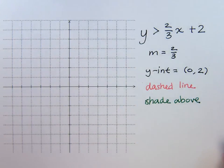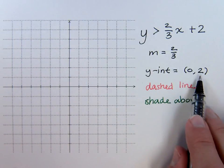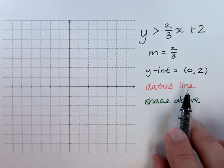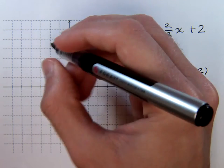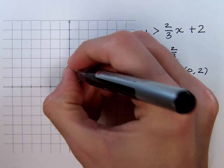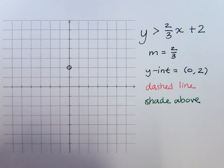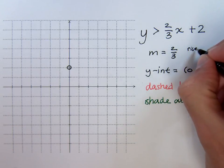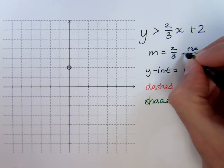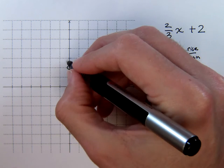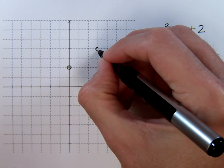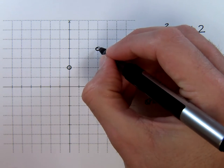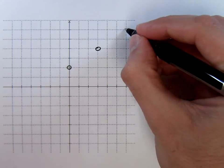The first piece to use is the y-intercept at zero, two. Remember, since it's a dashed line, any points plotted must be open circles. So here's my y-intercept of zero, two. Now I use my slope of two over three. Remember, this is rise over run, so I'm going to go up two and over three, then up two and over three again.